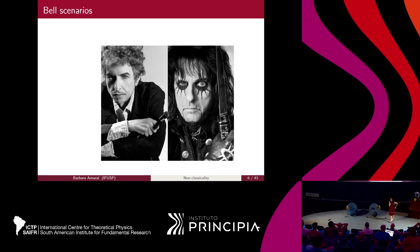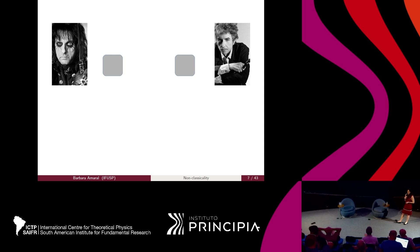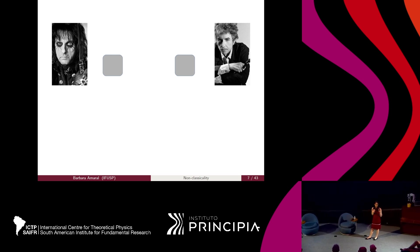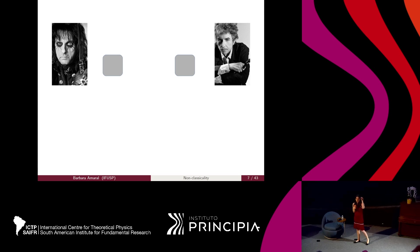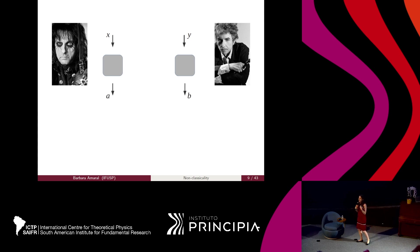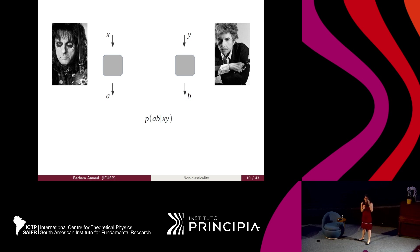In this notion of non-classicality called Bell non-locality, we have what we call a Bell scenario. I have at least a bipartite system — one part with Bob and the other with Alice. They are far apart from each other, so there is spatial separation between them. I will treat these systems as black boxes, meaning I don't care about the details of the physical systems inside. I only care about inputs — the different measurements I can make — and outputs, the outcomes for those measurements. Then I compute the probabilities.